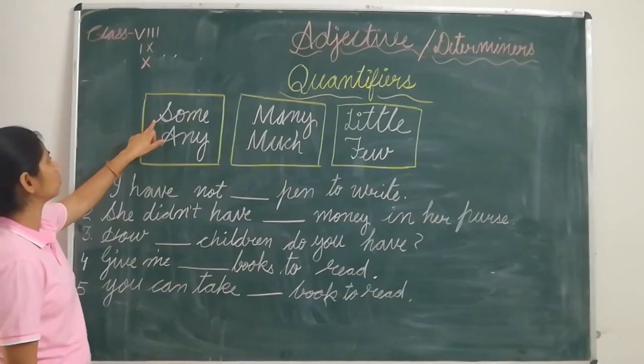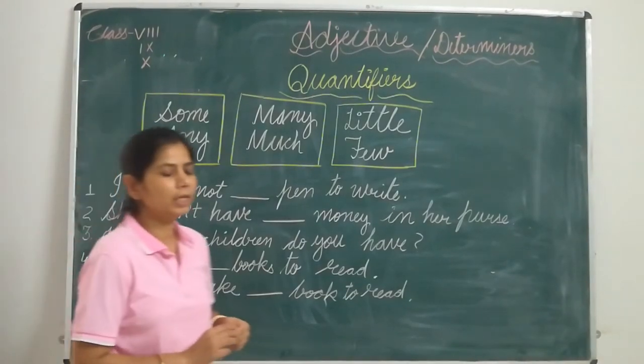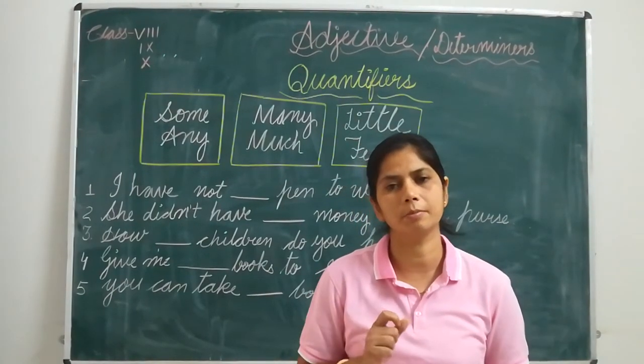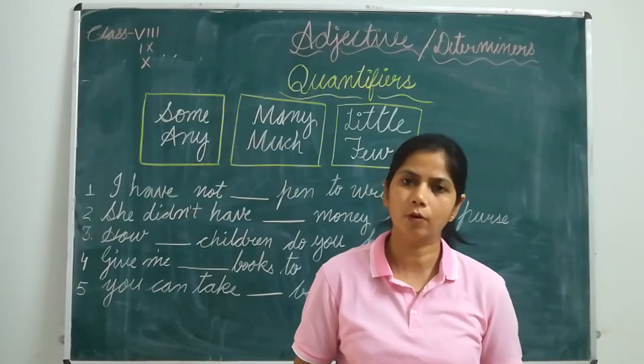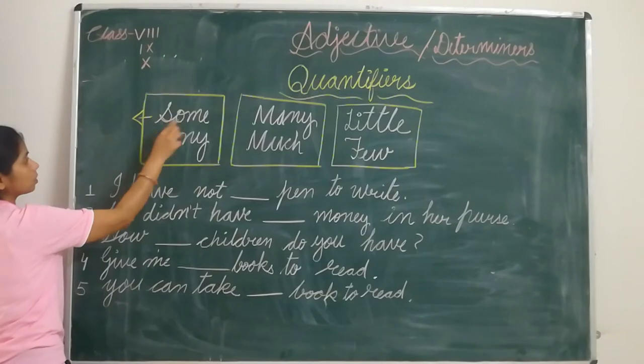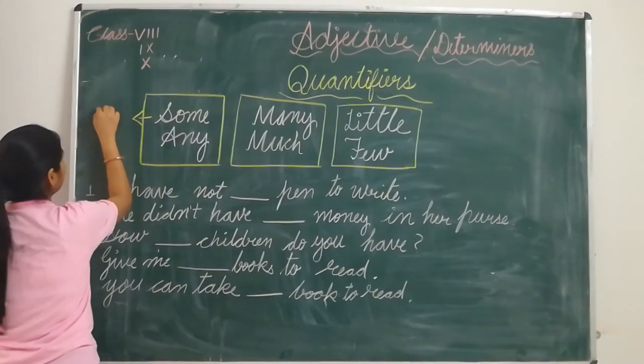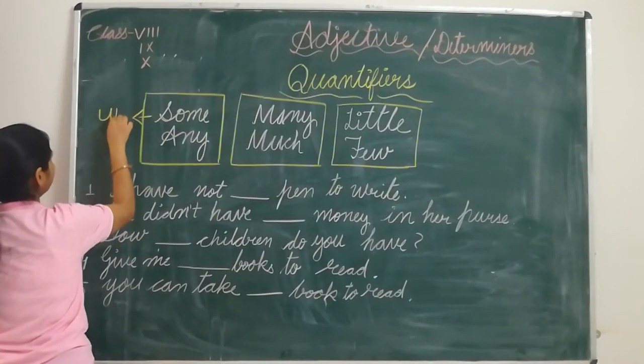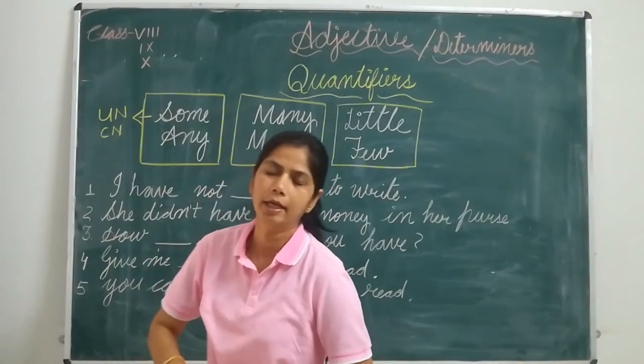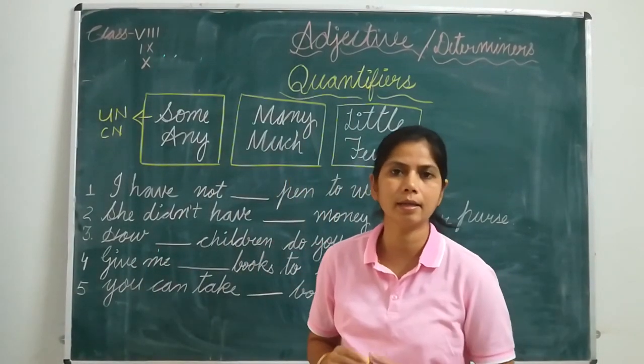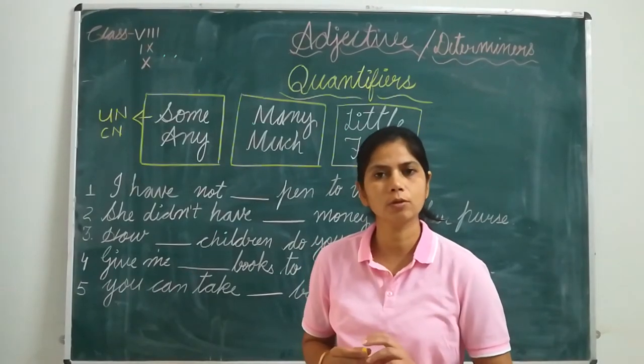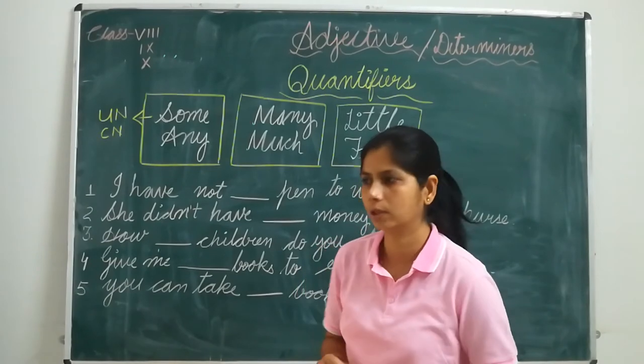When we talk about the use of some, we can use it before countable nouns and uncountable nouns. Some is the type of determiner or quantifier that we can use before both types of nouns. It means I can say some books or I can say some water. Books are countable and water is uncountable. I can use some with both nouns, countable or uncountable.